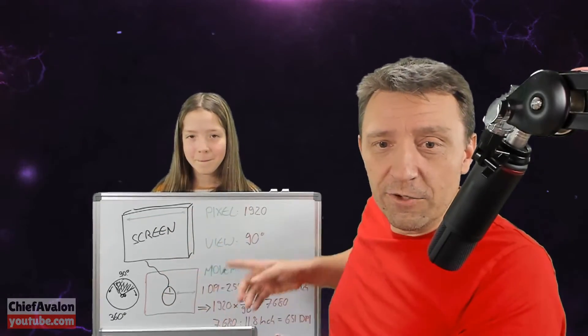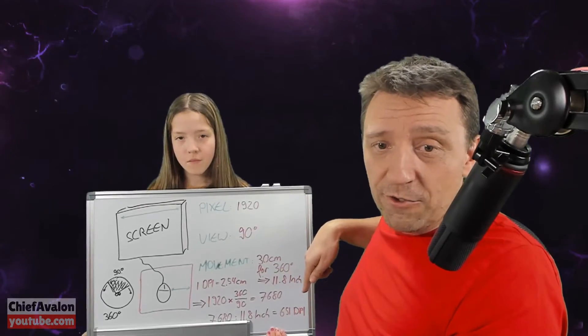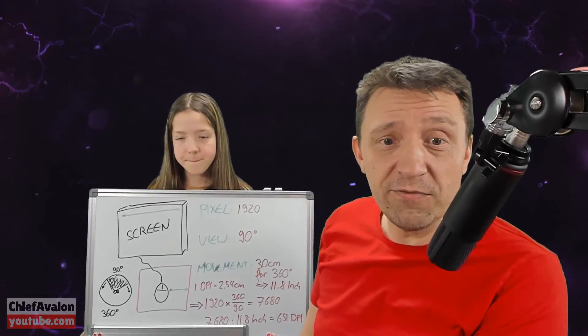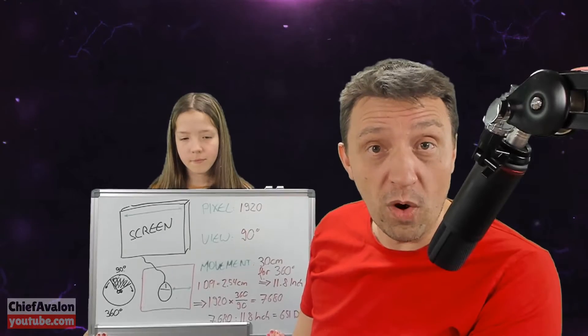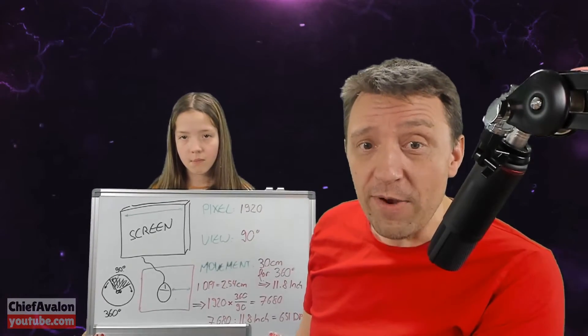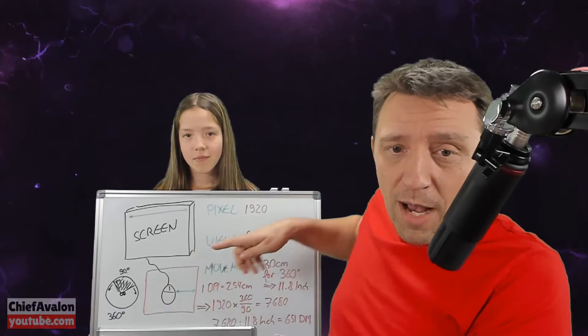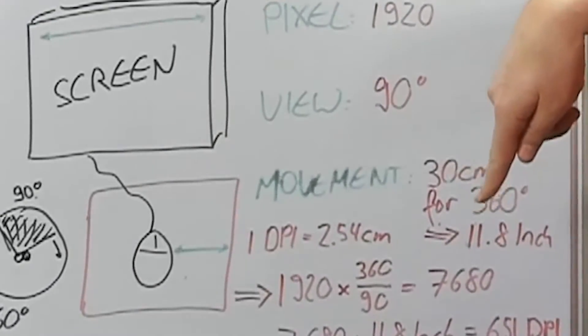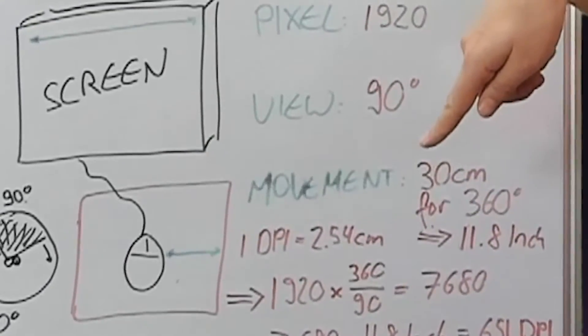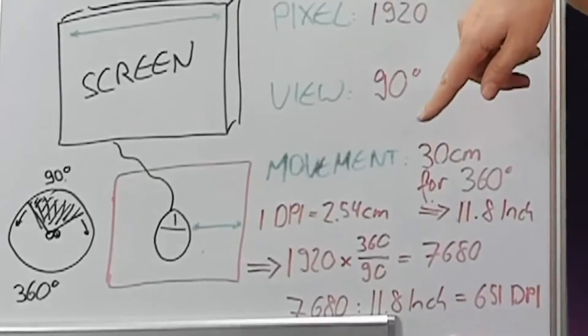So with these settings, you set your mouse to 700 DPI and that is fully sufficient for what you actually want. All you gotta do now is figure out what suits you best. Probably 30 centimeters or 11.8 inches for a full turn is too much. You gotta really figure that out.